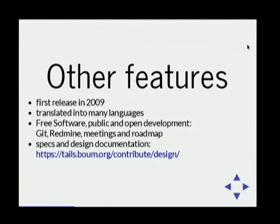The first public Tails release was put out in 2009, so it's five years now. The software we ship is translated in many languages. It's a free, public and open development project. We have git repositories, Redmine, mailing lists, monthly public meetings, all these things. And we try to document quite well what we are trying to do and how, thanks to our design documentation.